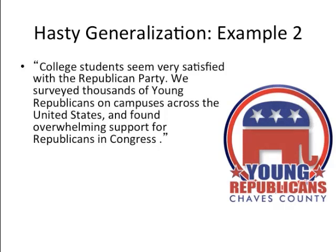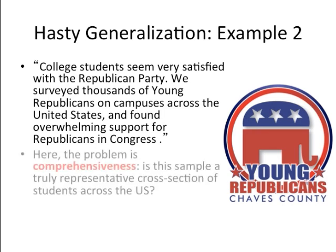Here's another faulty induction that can be characterized as a hasty generalization: 'College students seem very satisfied with the Republican Party. We surveyed thousands of young Republicans on campuses across the United States and found overwhelming support for Republicans in Congress.' The problem in this case isn't with the sample size, but the composition of the sample — it's made up exclusively of young Republicans. As a result, the survey cannot be considered comprehensive or representative of college students in general. It's skewed to favor a certain segment of the student population, and thus the conclusion is a generalization that we can't accept. It's a hasty generalization.